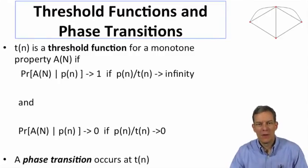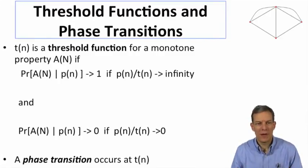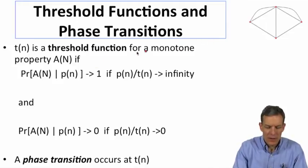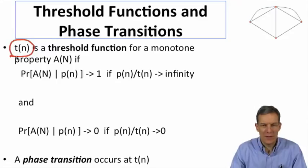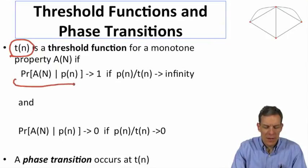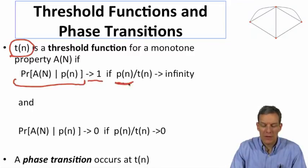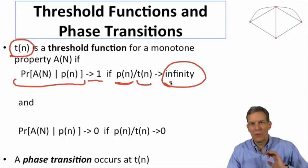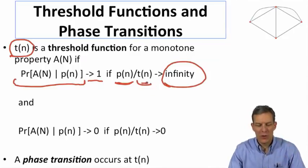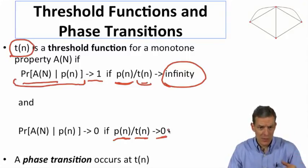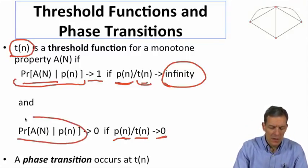When we talked about these properties, we were talking about monotone properties. We're specifying that on a given set of nodes n, we have a particular property, and we'll say that some function of n — called t(n) — is a threshold function for some property. If the probability that the property holds goes to 1, as long as the probability of links compared to this threshold is becoming quite large, heading towards infinity — so if we've got a probability much bigger than this threshold, we get the property for sure. And if we have a probability compared to the threshold which goes to 0, so the probability shrinks compared to the threshold, then the property does not hold.